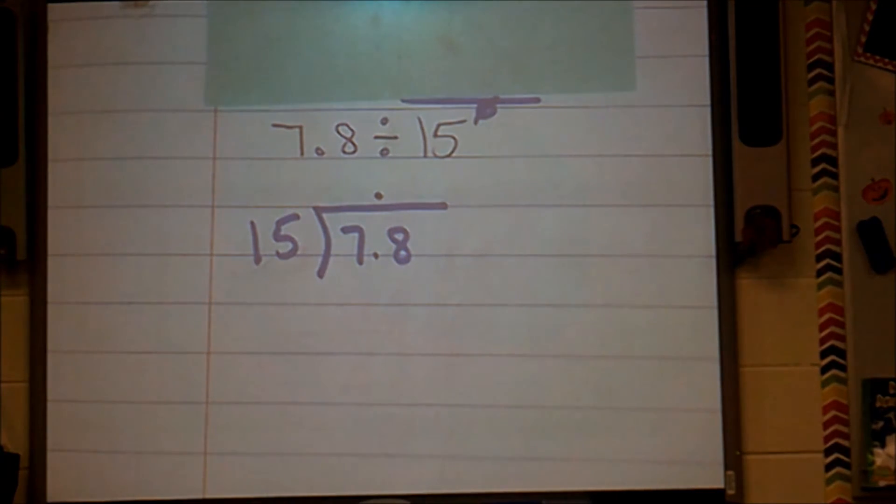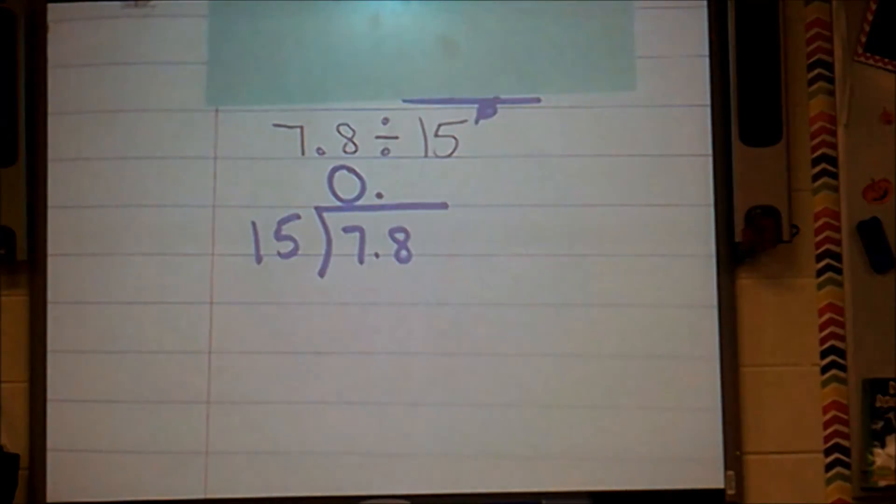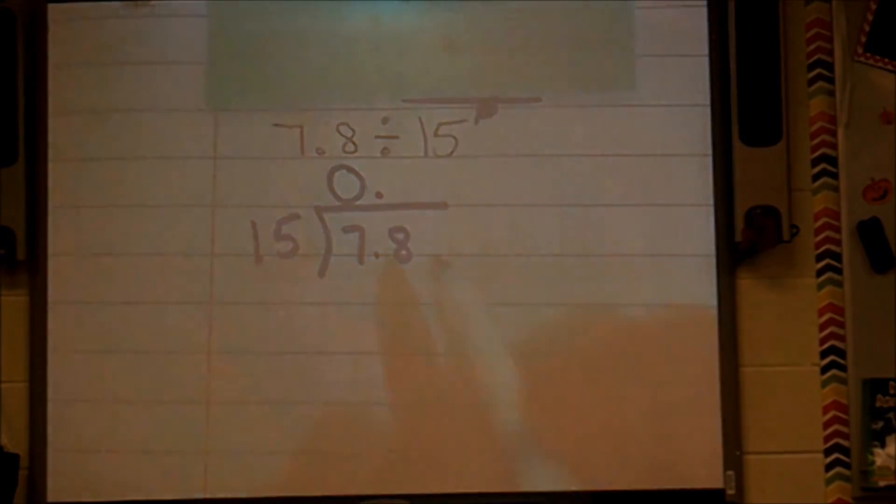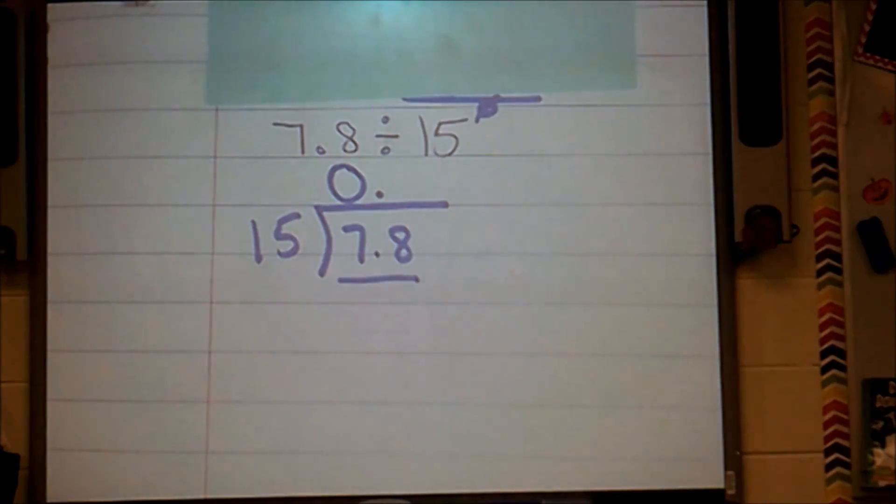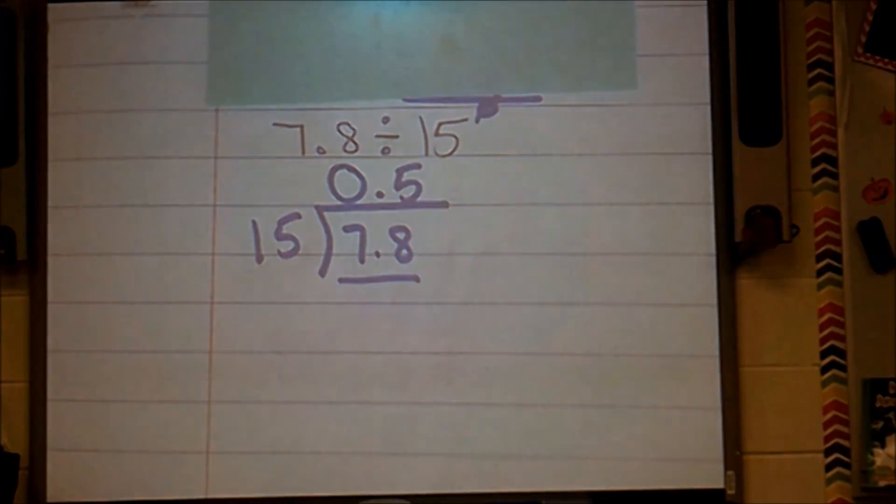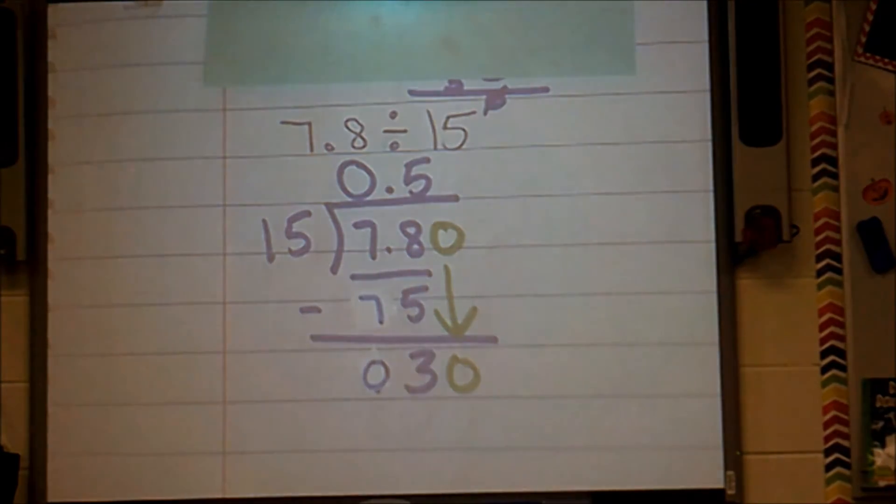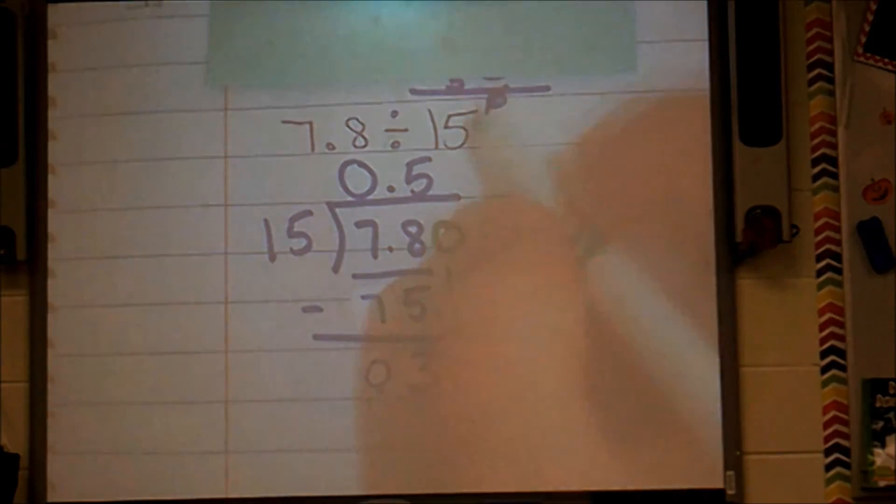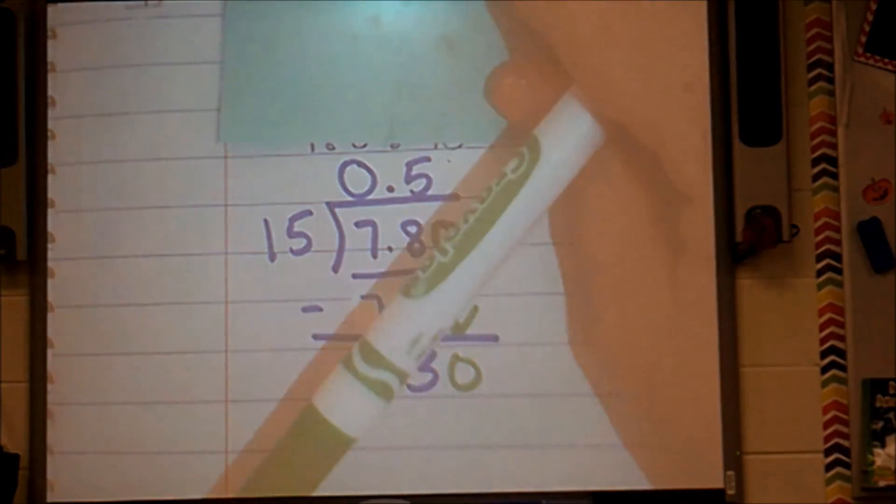And now I can successfully solve this problem. Fifteen can fit inside seven exactly zero times completely. Now fifteen can fit inside seven and eight five times. Fifteen goes into thirty two, five.